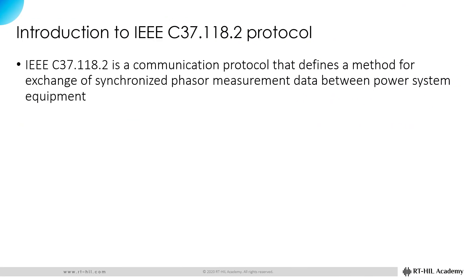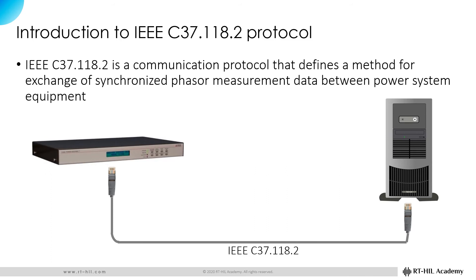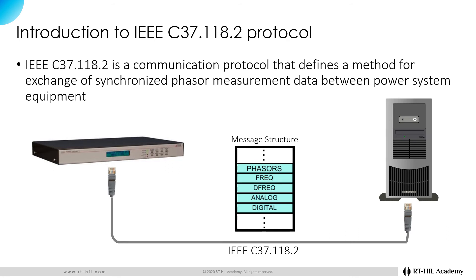What is the IEEE C37.118.2 protocol? The IEEE C37.118.2 is a communication protocol that defines a method for exchange of synchrophasor measurement data between power system equipment. In other words, this protocol is the language by which the phasor measurement units, or PMUs, communicate with other devices. Each data message complying with the IEEE C37.118.2 protocol contains the information of the synchrophasors, system frequency, rate of change of frequency, and user-defined analog and digital values. The PMU has to be configured to select what synchrophasors and what analog and digital values to include in the data messages.